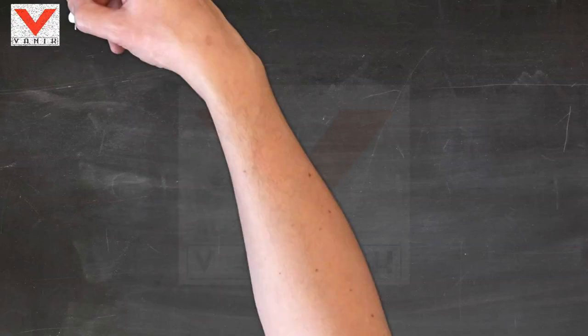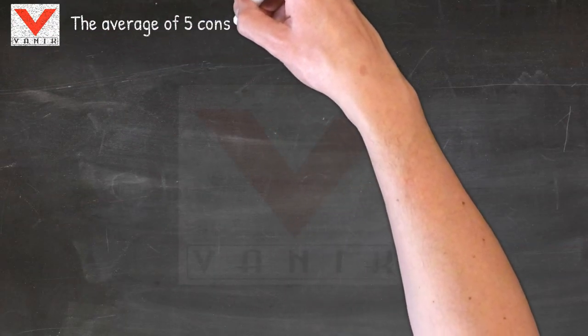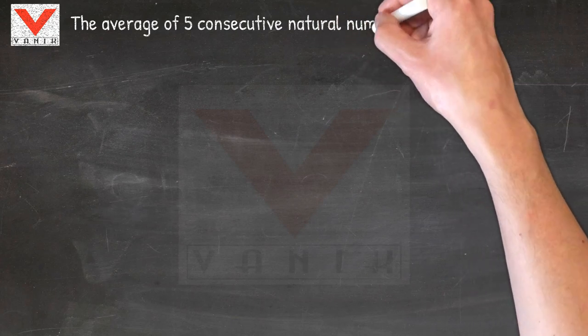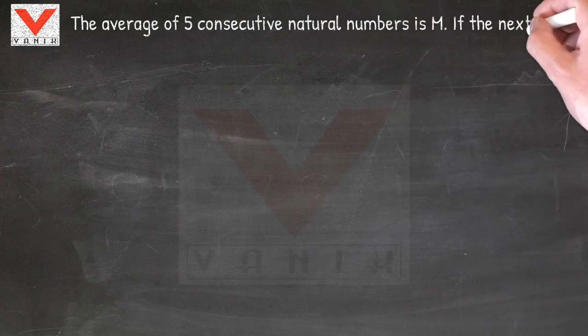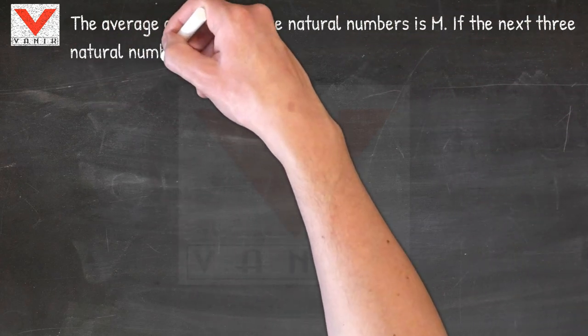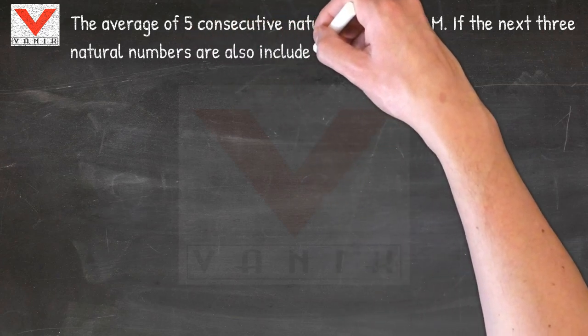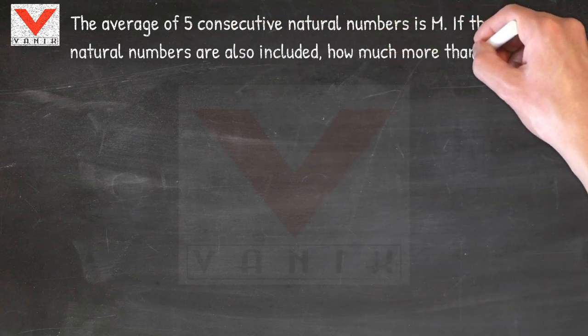Vanak aptitude tips. The average of five consecutive natural numbers is m. If the next three natural numbers are also included, how much more than m will the average of these eight numbers be?